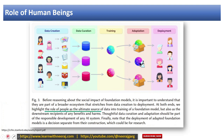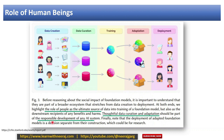The role of human beings is very crucial. Right from the data creation phase to the data consumption phase, both the producer and consumer are human beings — the generator is human and the consumer is also human. In between, layers like curation, training, and adaptation should involve thoughtful data curation and adaptation as part of the responsible development of these AI systems, so that they are more useful to us than harmful.